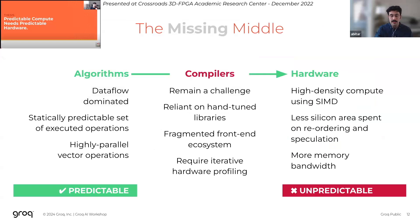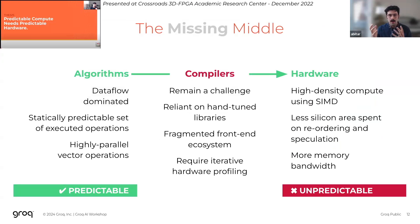I get into much more detail making the case for why predictable compute matters in a talk I gave previously in December 2022, where I described how in this era of deep learning, the workloads are very data-flow dominated and the algorithms are very predictable. This presents an opportunity: if we combine predictable algorithms with predictable hardware, we could potentially build a sort of holy grail of an automated parallelizing compiler that is not kernel-based and doesn't require manually hand-tuned libraries of kernels. I won't get into the full details in this talk, but I do encourage you to check out that previously recorded talk.